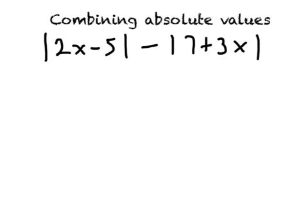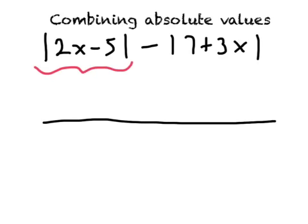We're going to get a piecewise function that contains three pieces. That's true in general — if you have two absolute values added or subtracted, you get a piecewise function with three pieces. The reason is we have to ask where each absolute value equals zero. The first, 2x minus 5, equals zero at five halves.